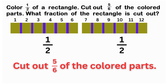Now, cut out five sixths of the colored parts. Siyempre, yung six na divisions sa first figure or first half, five lang doon ang i-co-color natin: one, two, three, four, five. Hanggang five lang tayo, kasi five sixths lang man daw ang i-cut out. Pero remember, there are twelve units — twelve bars total.